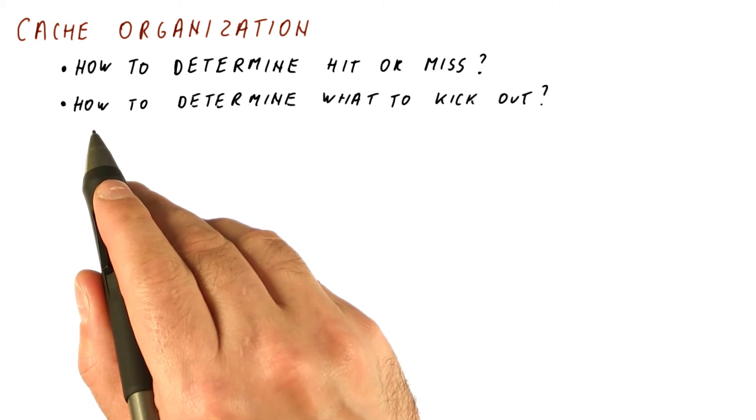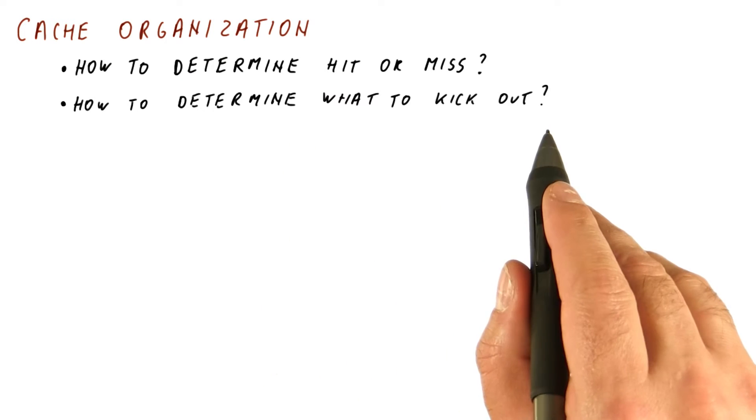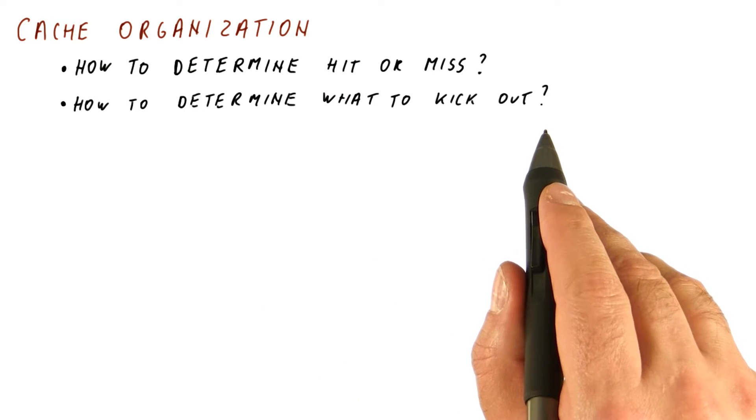And the other important question is how do we determine what to kick out from the cache once we are out of room in it, and we need to put more stuff in it because we are having a cache miss.